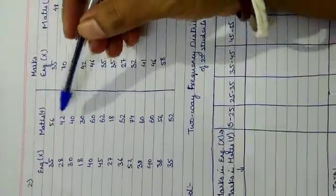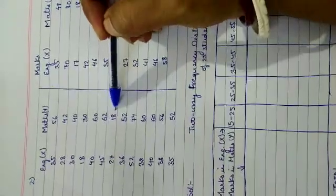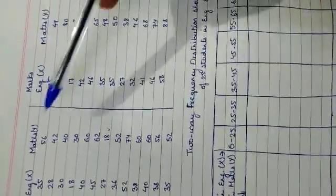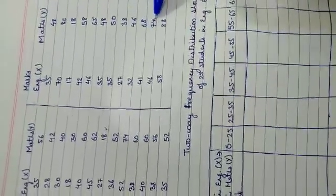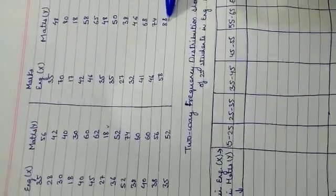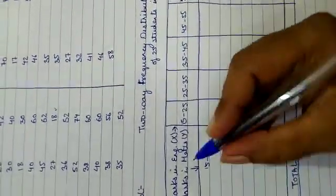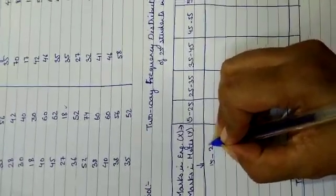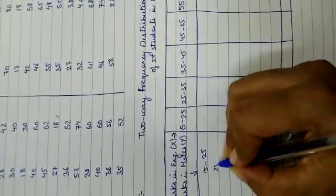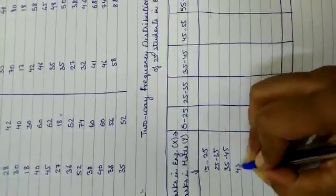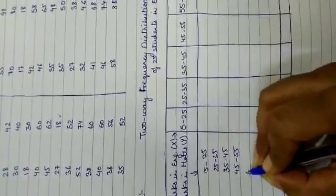Now let's look at the Y variable — marks in math. The smallest number is 18, so I can start with 15. The largest number is 88, so I have to go till 95. I am taking the same difference of 10 here also.